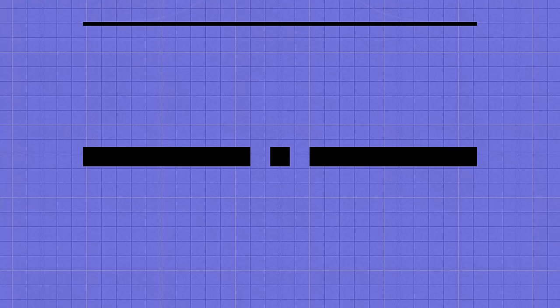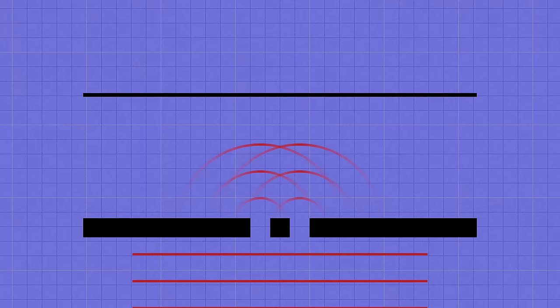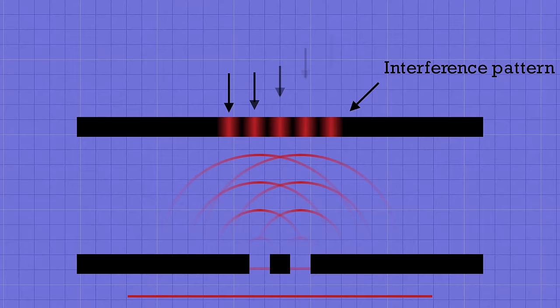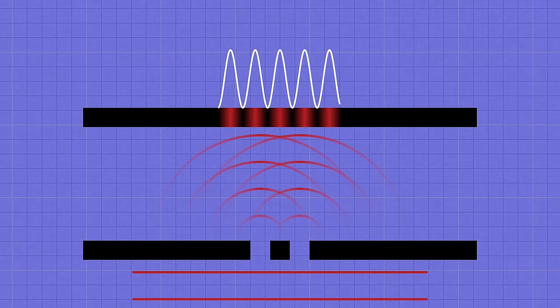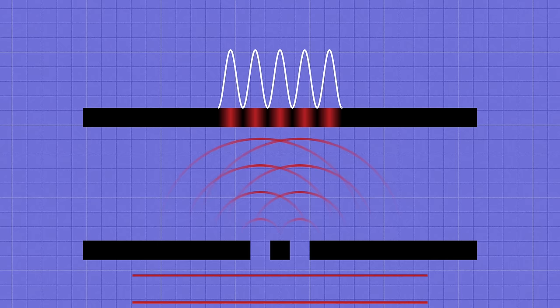The total distribution was the sum of those two curves, because each particle either went through one hole or the other. That gave us one broad bump in the center of the backstop. Next, we looked at waves, like light waves. That was more interesting because the two waves coming out of the holes can interfere with each other and produce what's called an interference pattern on the back screen. The bright spots are where the waves add together to make a bigger wave, which is called constructive interference. And the dark spots are where the interference is destructive and the waves cancel each other out.